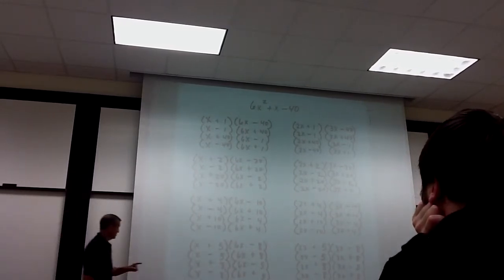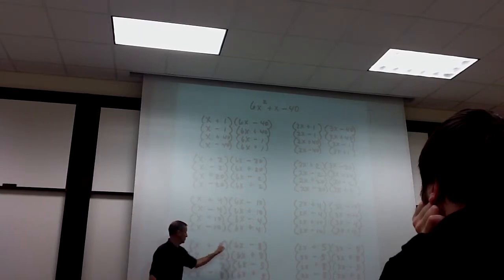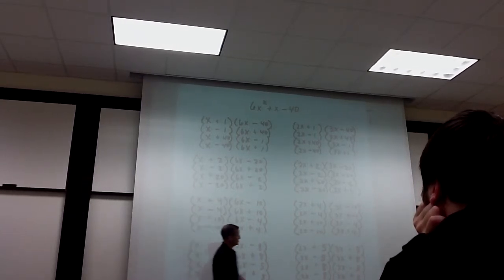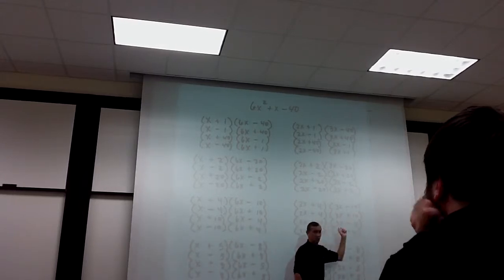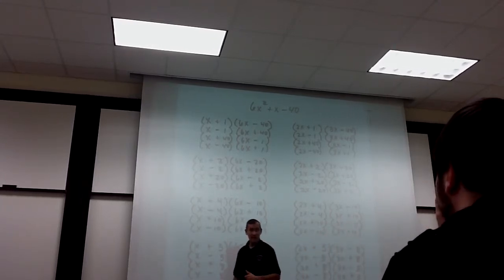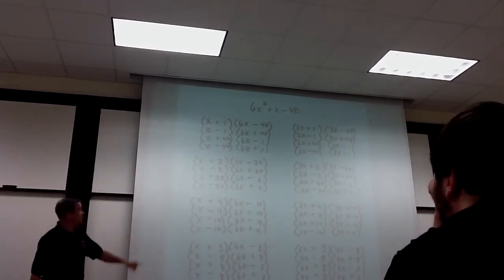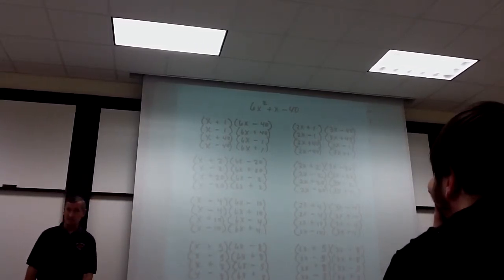Each one of these binomials, the first two multiply, you get 6x squared. And the last two multiply, you get negative 40 on every one of them. But only one of them works. Only one of them will give you the plus x in the middle when you do the outer and inner.